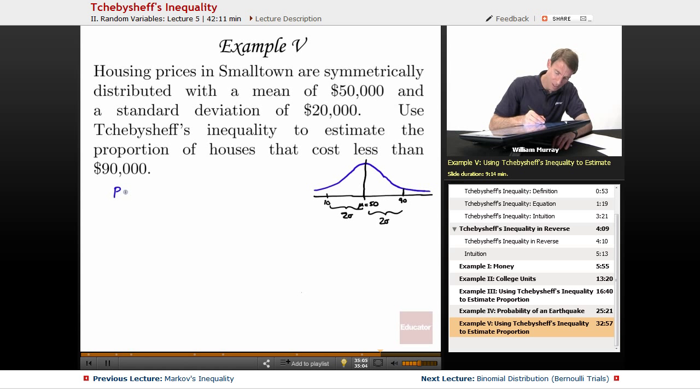So Chebyshev says the probability that y will be more than k standard deviations away from its mean is less than or equal to 1 over k squared. So in this case, we're interested in being two standard deviations away from the mean. The way I got that was 90 minus 50 is 40, which is 2 times 20. So that's two standard deviations there.